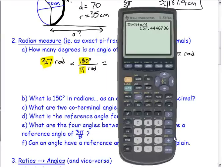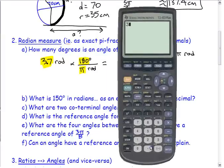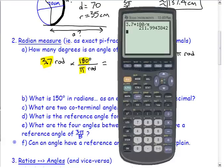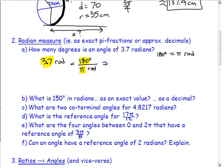Going to the calculator: 3.7 times 180 divided by pi. Making sure it looks right — 3.7 radians is a little more than halfway around, and 211 degrees is also a little more than halfway around, so that checks out. Rounding to one decimal place gives approximately 212.0 degrees.